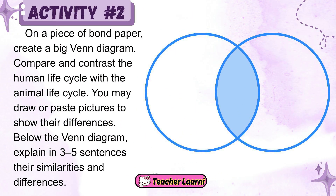Activity number two: on a piece of bond paper, create a big Venn diagram. Compare and contrast the human life cycle with the animal life cycle. You may draw or paste pictures to show their differences. Below the Venn diagram, explain in three to five sentences their similarities and differences.